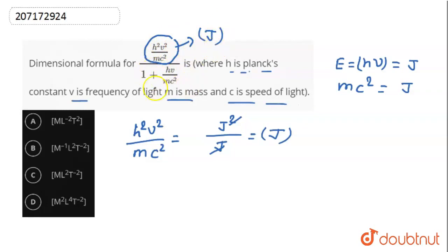Now, the denominator is 1 plus H nu divided by mc square. This H nu is energy and mc square is energy. So 1 plus joule divided by joule. These cancel. We will get a dimensionless formula. The denominator is dimensionless, no dimension.